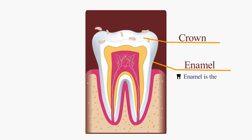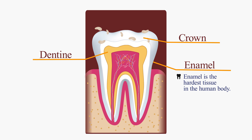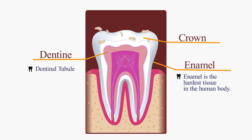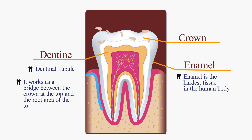Enamel is the hardest tissue in the human body. There is a layer which is softer than enamel and it is called dentine. It is a tissue that forms the tooth from the dental crown to the tooth root. A small tube filled with tissue fluid, called the dentinal tubule, runs inside the dentine and works as a bridge between the crown at the top and the root area of the tooth.